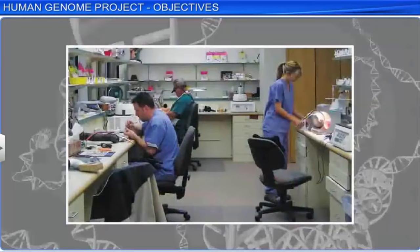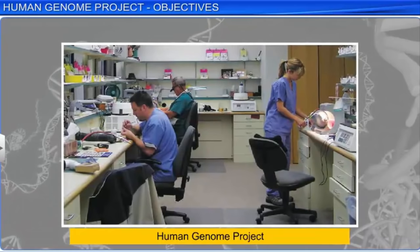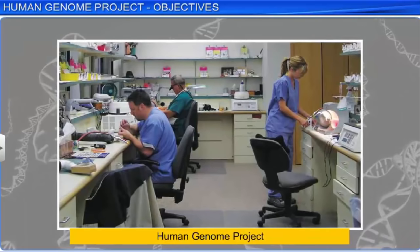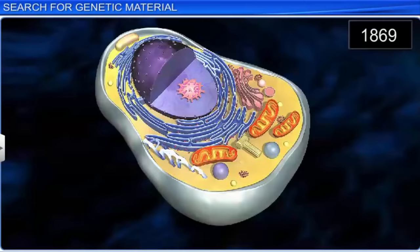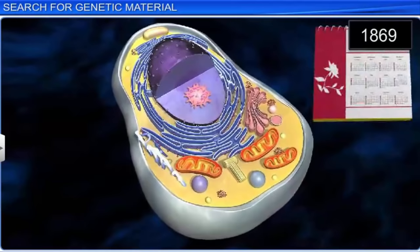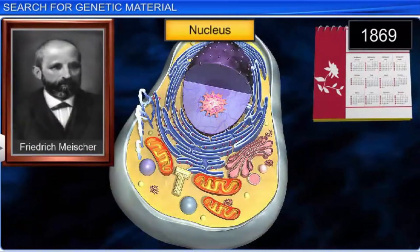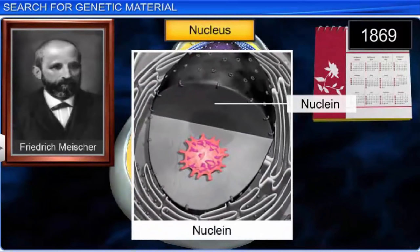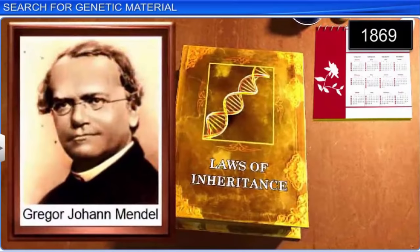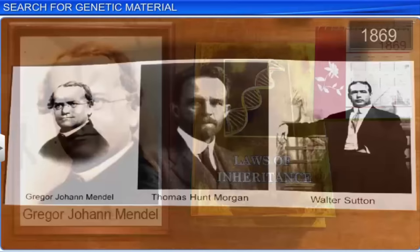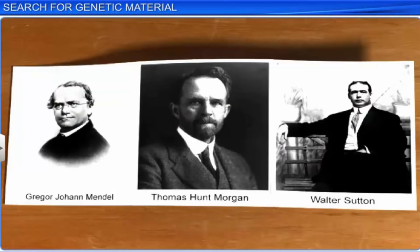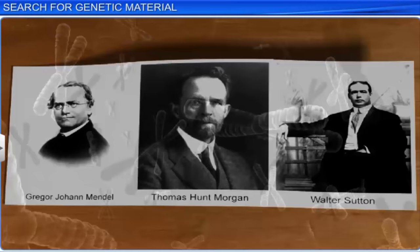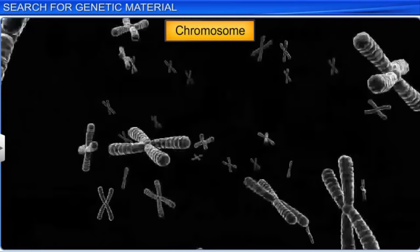Though the HGP was a mammoth and hugely beneficial project, it required enormous effort, cost, and innovation, as well as caution, to accomplish it successfully. In 1869, Friedrich Miescher isolated an acidic material from the nucleus of a cell and called it Nuclein, now known as Nucleic Acids. Also around the same time, Gregor Mendel proposed the principles of inheritance. Gregor Mendel, Thomas Hunt Morgan, Walter Sutton, and numerous other scientists had narrowed their search for genetic material to chromosomes.